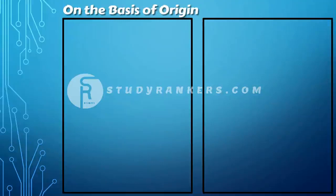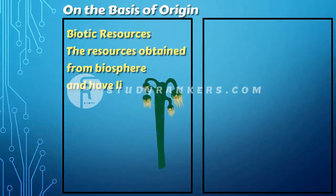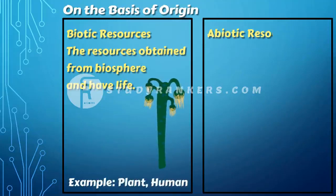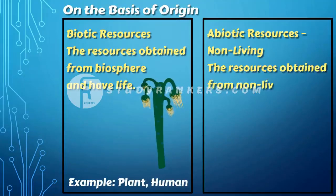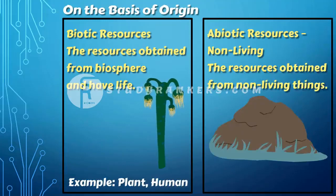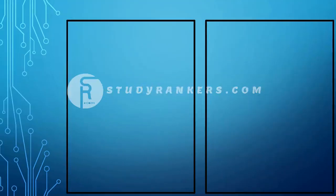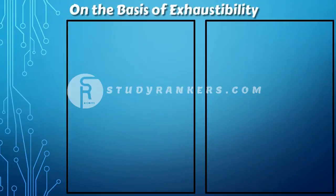Biotic resources are obtained from the biosphere and have life, such as human beings, flora and fauna, fisheries, livestock, etc. Abiotic resources consist of all those things which are composed of non-living things, for example rocks and metals.